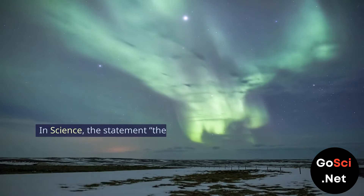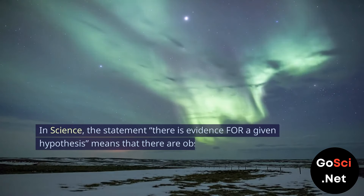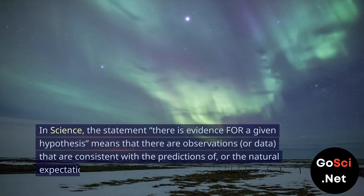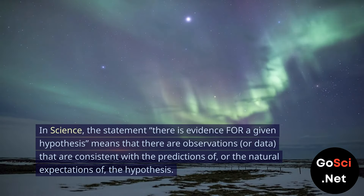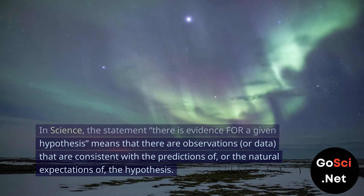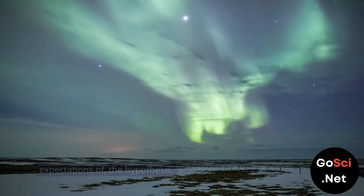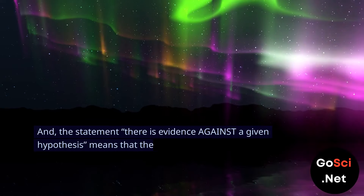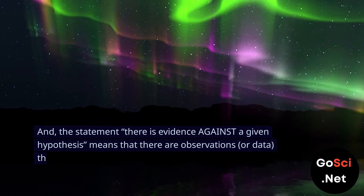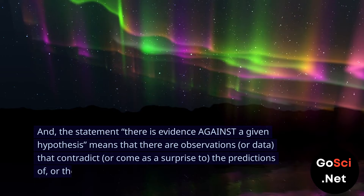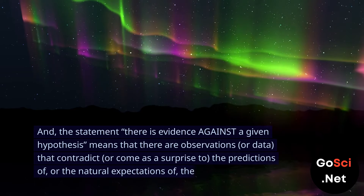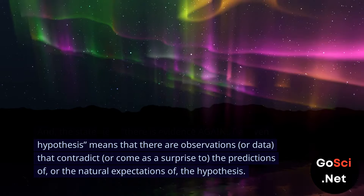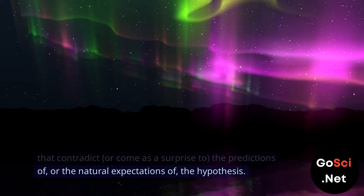In science, the statement 'there is evidence for a given hypothesis' means that there are observations, or data, that are consistent with the predictions of, or the natural expectations of, the hypothesis. And the statement 'there is evidence against a given hypothesis' means that there are observations, or data, that contradict, or come as a surprise to, the predictions of, or the natural expectations of, the hypothesis.